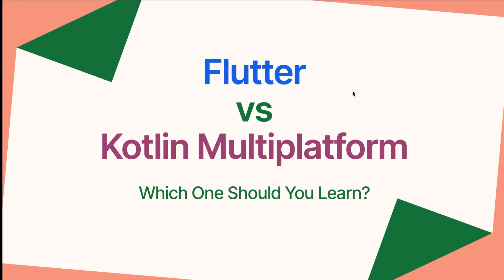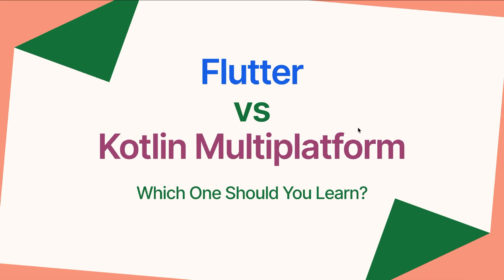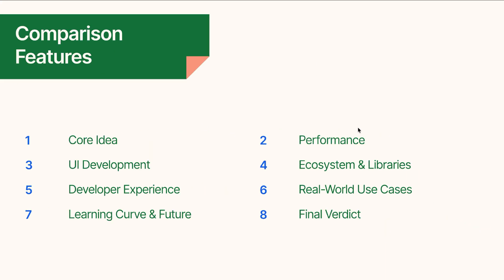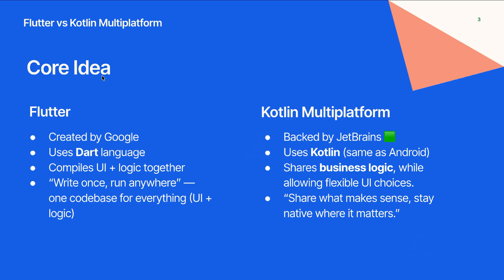Now let's go to the comparisons. The features we'll compare are: core idea, performance, UI development, ecosystem and libraries, developer experience, real-world use cases, learning curve, and final verdict. Starting with core idea — Flutter is created by Google, uses the Dart language, compiles UI plus logic together, and is a write-once-run-everywhere solution: one codebase for everything.